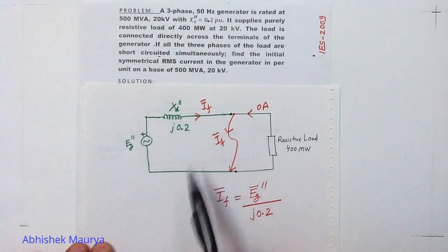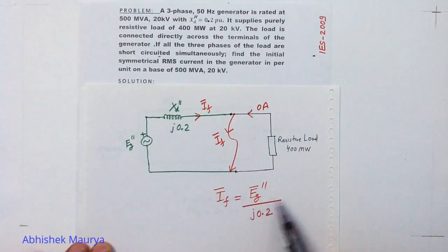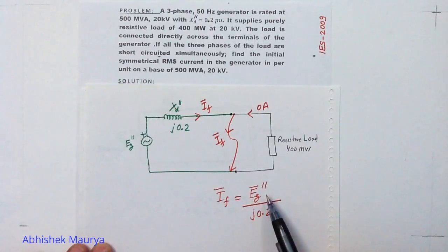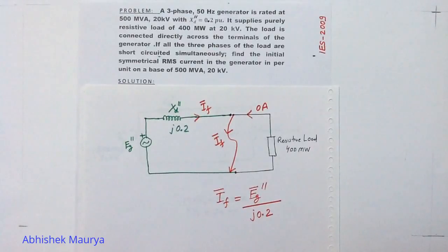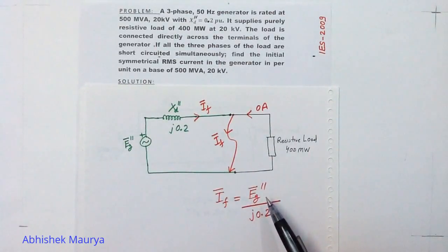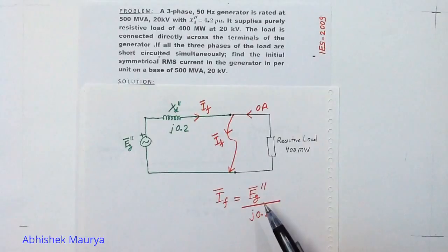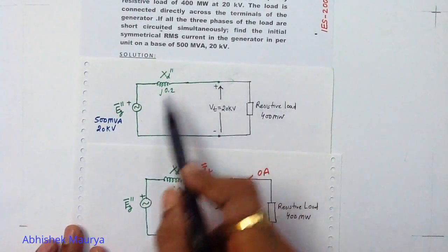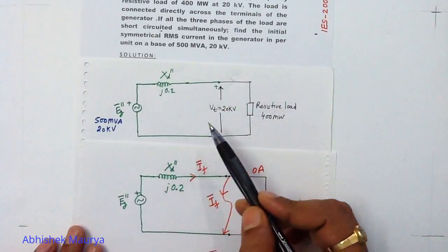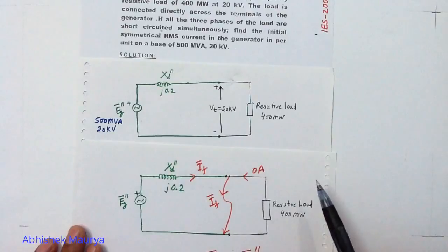After applying KVL you can write the equation: IF equals Eg double-dash upon J0.2. If you know the value of Eg double-dash — the sub-transient internal voltage of the generator — you can find the answer easily. This sub-transient internal voltage is always calculated from the pre-fault circuit, which is the circuit available to us just before the fault.